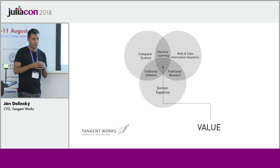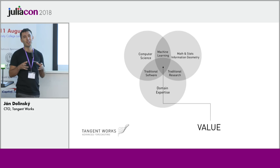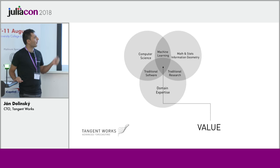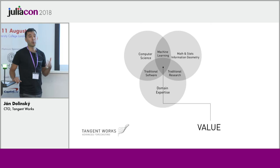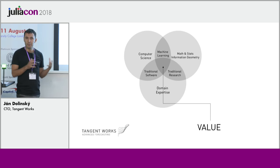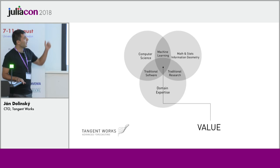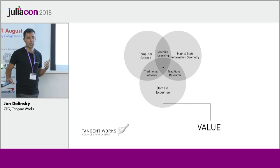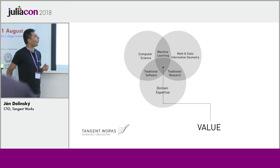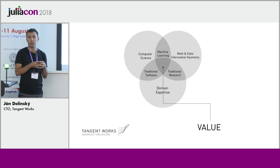Let me start by giving you a bit of an introduction on how a product can emerge. It's typically a combination of a couple of fields of expertise. You need domain expertise to understand why you are solving a certain problem. Then you need knowledge on how to solve it — whether it should be a differential equation solver or image recognition solver — using your mathematical knowledge. And finally, you need computer science skills so that your implementation is easy to maintain, quick to deploy, quick to develop, and fast.